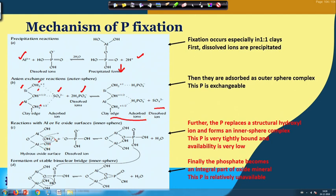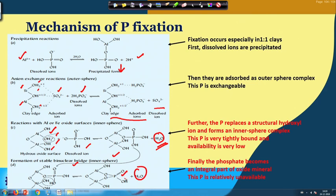The third way is formation of an inner sphere complex by reaction with aluminium and iron oxide surfaces. H₂PO₄⁻ reacts with hydroxyl groups on the oxide surface; OH₂ and one H are released as water, forming a compound. In the second step, a stable binuclear bridge forms — this is the inner sphere complex. The phosphorus replaces structural hydroxyl ions and becomes very tightly bound, making availability very low. Finally, the phosphate becomes an integral part of oxide minerals and is relatively unavailable.